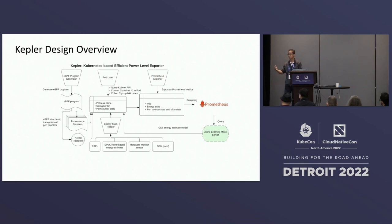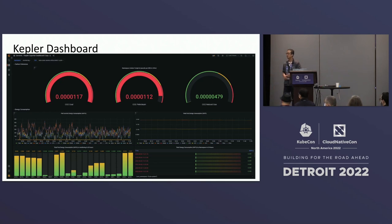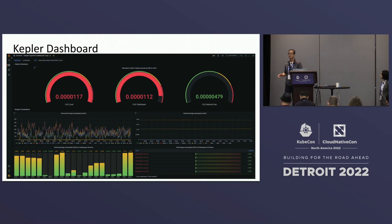Here is one of the dashboards we are using, thanks to community contributors. We are trying to give you intuitions about how much carbon footprint your workload will generate, what the variations over time are, and your workload's consumption on different components like CPU, DRAM, and GPU. We also provide rankings at the namespace level. With these metrics, there's unlimited potential for how much information you can build up for your final visualization.